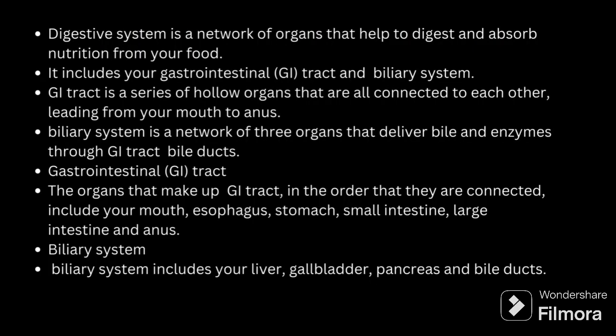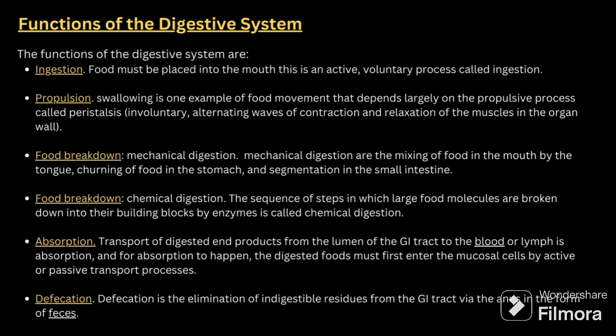You have to be very clear with the diagram. The digestive system is a network of organs that helps to digest and absorb nutrition from your food. It includes the gastrointestinal tract and the biliary system. The GI tract is a series of hollow organs connected to each other leading from the mouth to the anus. The biliary system is a network of three organs that deliver bile enzymes through the bile ducts. The biliary system includes liver, gallbladder, pancreas, and bile duct.